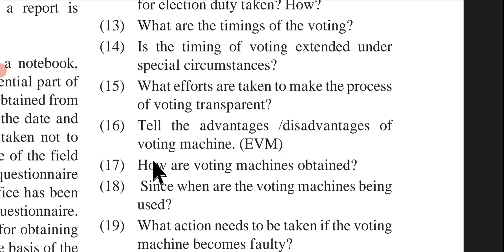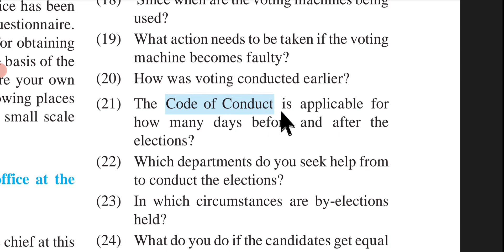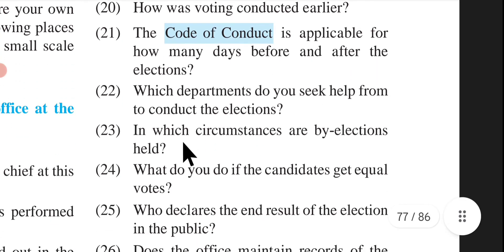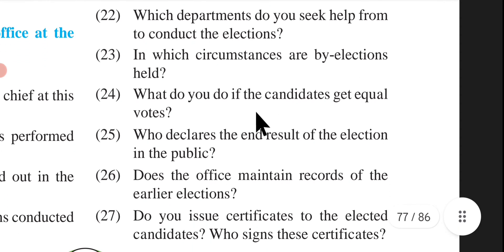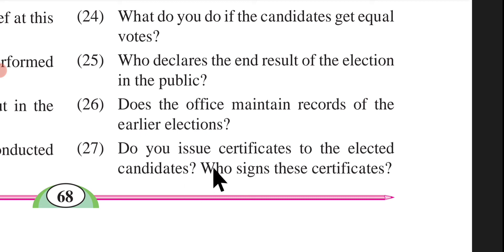How are voting machines obtained? Since when are the voting machines being used? What action needs to be taken if the voting machine becomes faulty? How was voting conducted earlier? The code of conduct is applicable for how many days before and after the elections? Which departments do you seek help from to conduct the elections? In which circumstances are by-elections held? What do you do if the candidates get equal votes? Who signs these certificates?